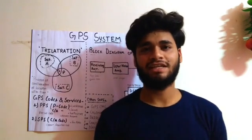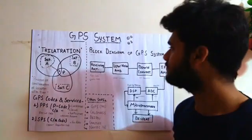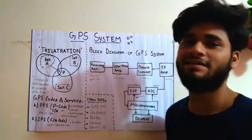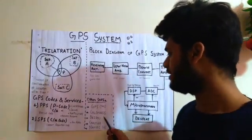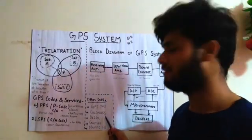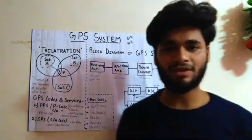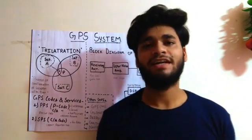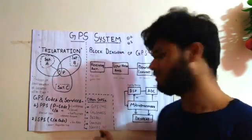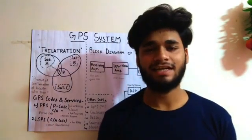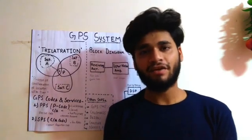Now let me introduce the other navigation systems prominent in the world. We were talking about the GPS system introduced by the USA. Other systems include GLONASS from Russia, Baidu from China, Galileo from the European Union, and India has also developed its own navigation system called NAVIC. NAVIC consists of six satellites, but since it has not been completely developed, we are not currently using NAVIC.